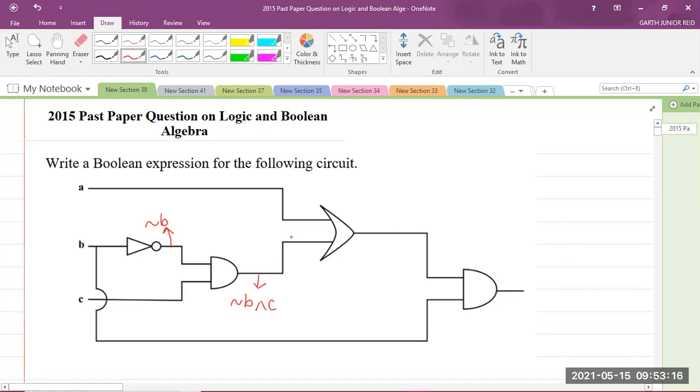So when A and NOT B and C goes through the OR gate, we will get the output as A or NOT B and C. Please ensure to use your brackets because the brackets are very important.